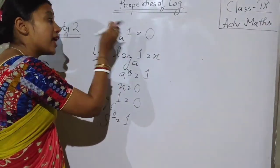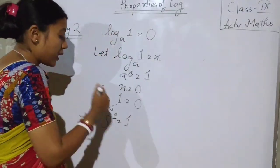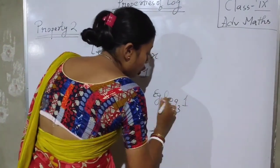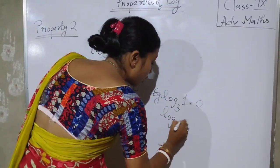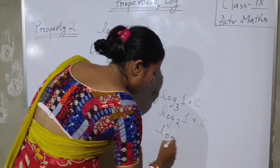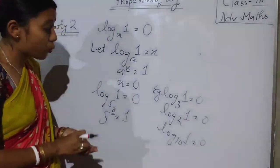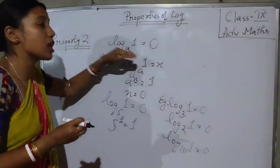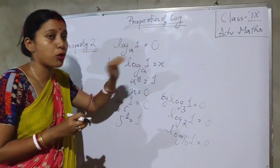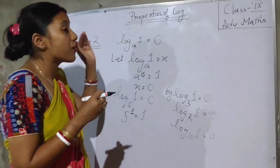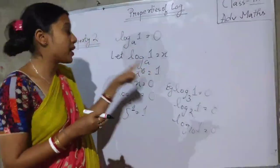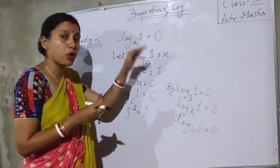That means log of 1 at any base will be 0. For example, log of 1 base 3 is also 0, log of 1 base 2 is also 0, log of 1 base 10 is also 0. So, property 1 was log of any number at the same base is equal to 1, and property 2 is log of 1 at any base is equal to 0.